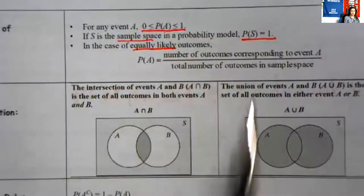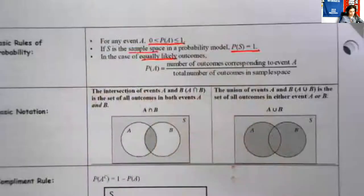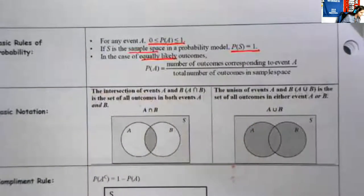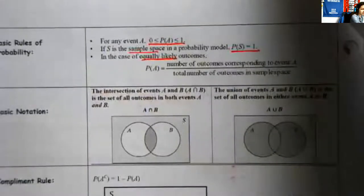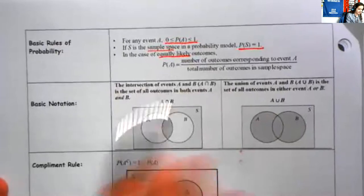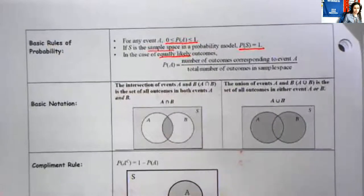In the case of equally likely outcomes, you have your general probability rule, which says the probability of something happening — event A — is the number of outcomes that are A, divided by the total number of outcomes in the sample space. So some notation: we're going to talk about events and sample spaces visually with areas, using Venn diagrams.